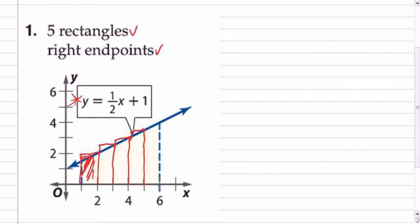One, two, three, four, five rectangles. We have five rectangles, which we have here. Let me just get all those in.